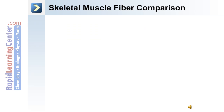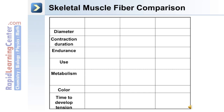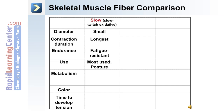The following table describes the characteristics of the three fiber types. Slow or slow twitch oxidative fibers have a small diameter with the longest contraction duration. They are fatigue-resistant and mostly used during posture. Their metabolism is oxidative, their color is dark red, and they are the slowest to develop tension.